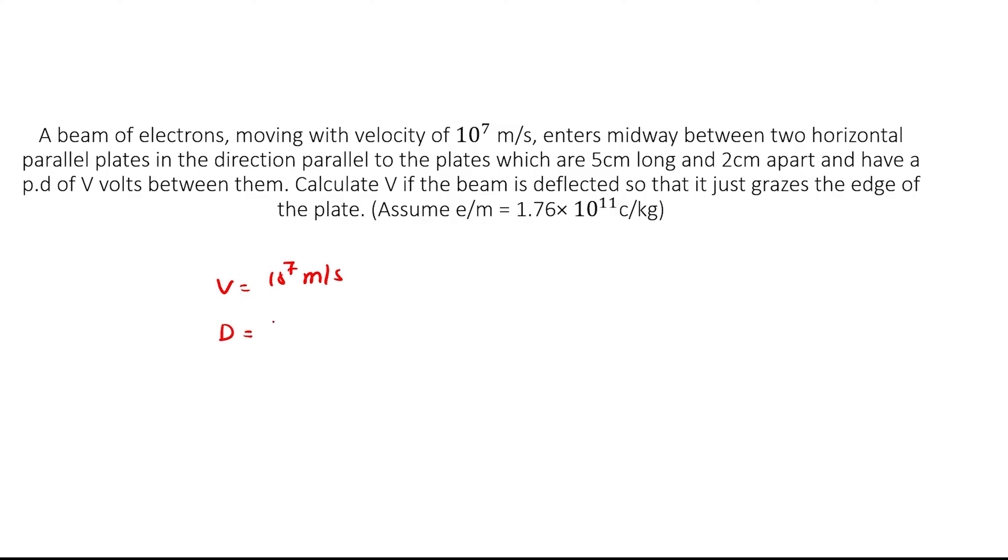Distance is 5 cm, which is 5 into 10 to the power minus 2 meters. Small d is the distance of separation, which is 2 into 10 to the power minus 2 meters, and potential difference is V.